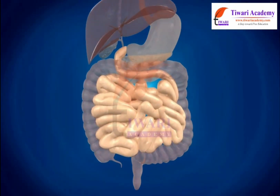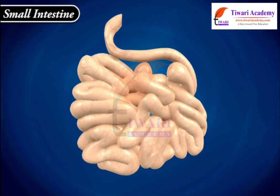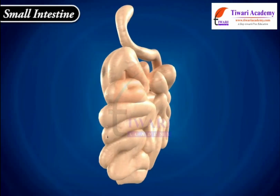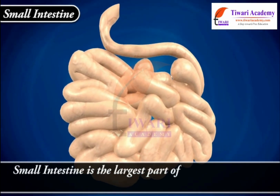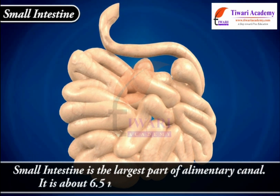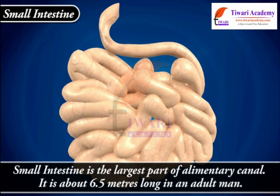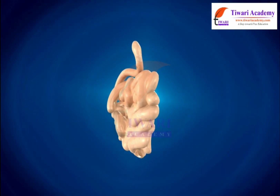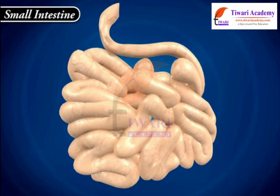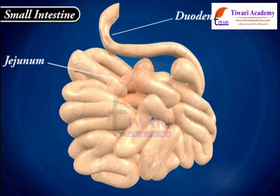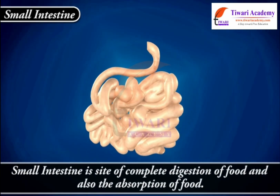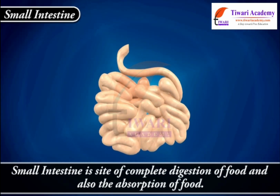After the stomach, food is passed to the small intestine. Small intestine is the largest part of the alimentary canal, about 6.5 meters long in an adult man. It is called 'small' intestine because it is very narrow. Small intestine is divided into duodenum, jejunum and ileum. It is the site of complete digestion of food and also the absorption of food.